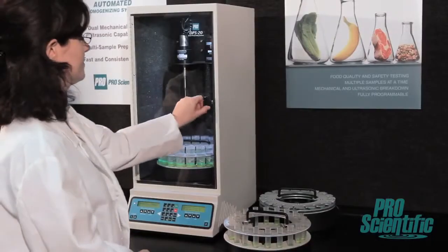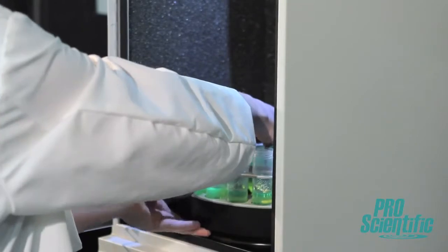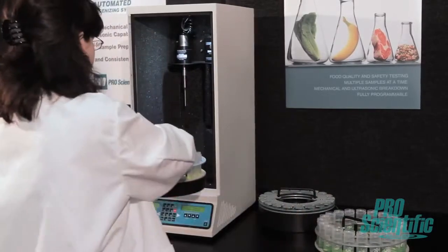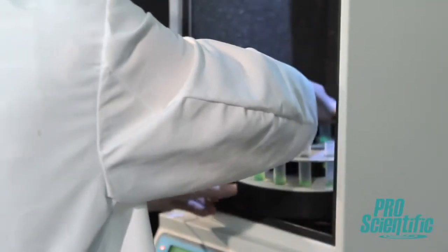High throughput is easily achieved when using the DPS20. With it, you can efficiently process up to 20 samples in one run that lasts mere minutes. Additional carousel trays can be purchased for standby and are easily loaded and unloaded. And when cross-contamination is a concern, you have the option of adding a shared rinse or unique rinse after each sample run.